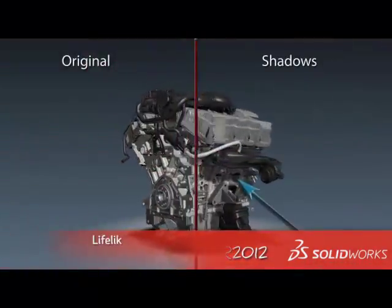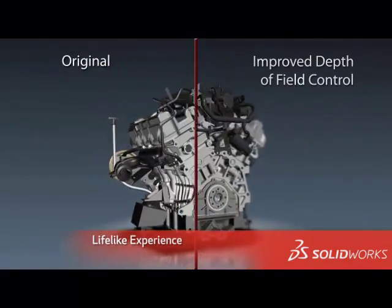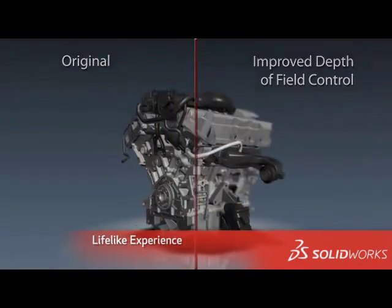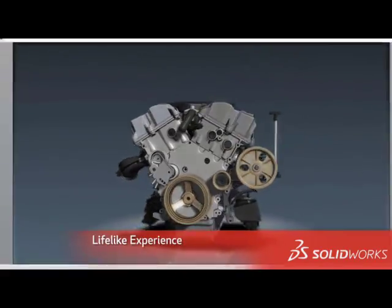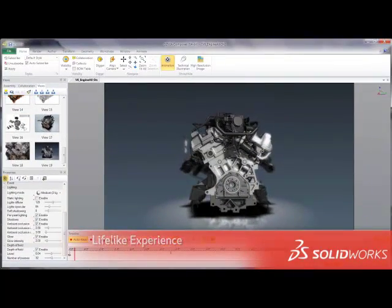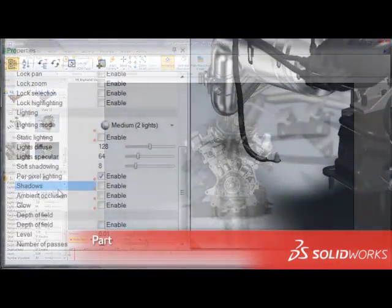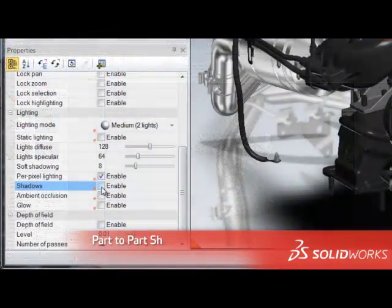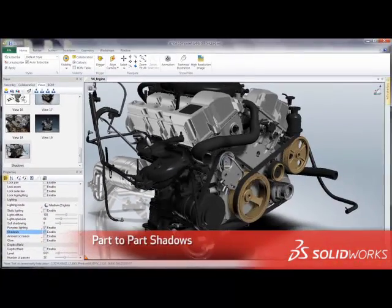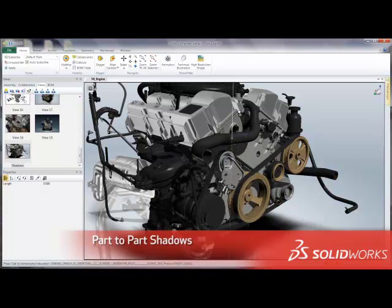For a more lifelike experience, 3D Via Composer now includes advanced rendering capabilities that make creating immersive product experiences more dynamic and even easier than before. Improve the appearance of your 3D models by adding shadow effects that correspond with the lighting in your views. Now in V6R 2012, you can display part-to-part shadows in all built-in lighting modes.